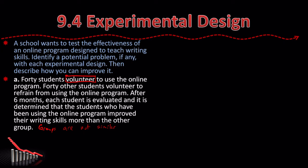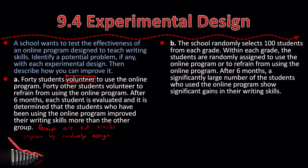What you need to do to improve is randomly assign the students to the two groups. Now let's try another one: the school randomly selects 100 students from each grade; within each grade, the students are randomly assigned to use the online program or refrain from using it. After six months, a significantly larger number of students who used the online program showed gains in their writing skills. What's the problem? There are no potential problems — that's a good setup.